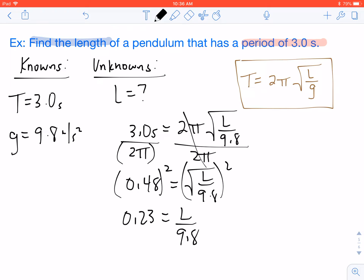And at this point, all we really need to do is throw this over 1, and we will cross-multiply to find our L value. So L is going to equal 0.23 times 9.8. And so we get our length of 2.25 meters.